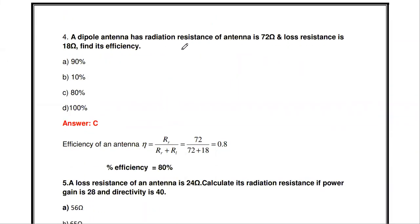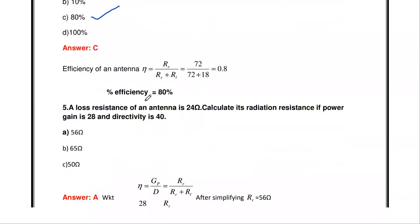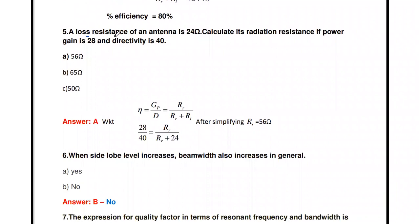Next question: a dipole antenna has a radiation resistance of 72 ohms and loss resistance of 18 ohms; find its efficiency. Using η = Rr / (Rr + Rl) = 72 / (72 + 18) = 72 / 90 = 0.8. To express as a percentage, multiply by 100, giving 80%. The efficiency of this dipole antenna is 80%.